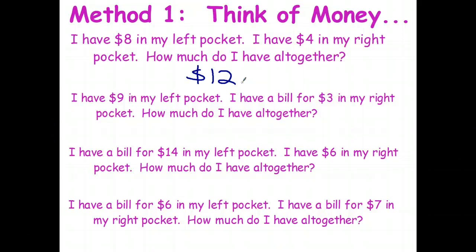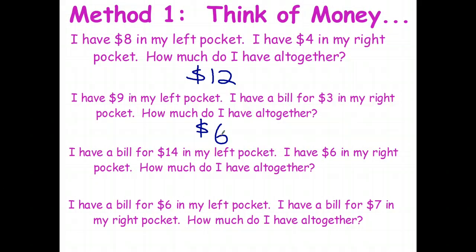If I've got nine dollars in my left pocket and a bill for three dollars in my right pocket, I can pay off the bill and still have six dollars left. So nine plus negative three equals six. A positive plus a negative is the same as nine minus three, which is six.